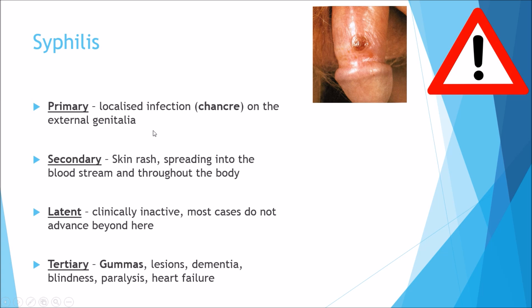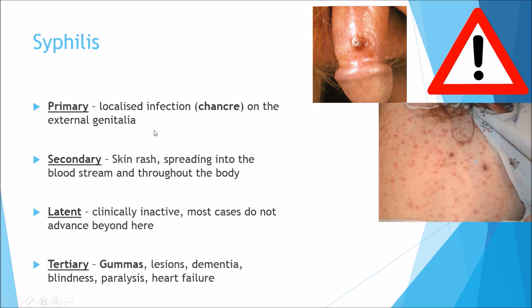The secondary stage of syphilis is a skin rash, similar to chickenpox in how it infects the whole body. So if you've got the initial genital signs and you've also got this rash all over your body, you may have secondary syphilis.